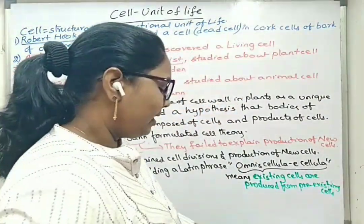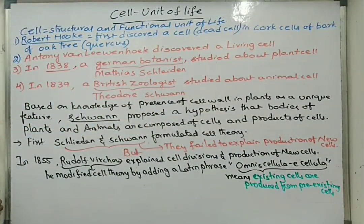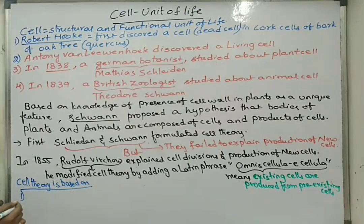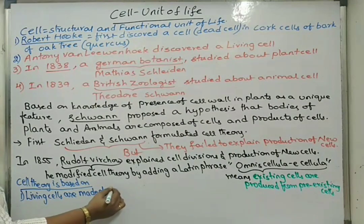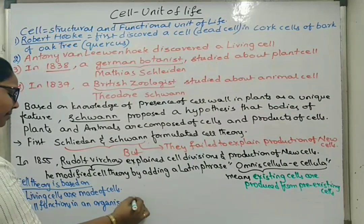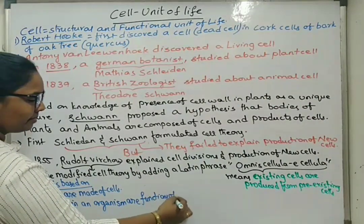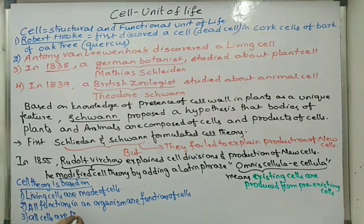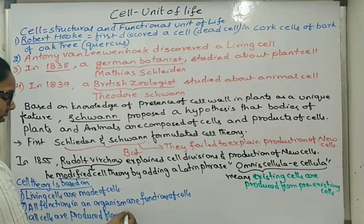This is one important phrase given in cell theory. The cell theory is based on three points: first, all living cells are made of cells; second, all functions in an organism are functions of cells; and third, according to the modification added by Rudolf Virchow, all cells are produced from pre-existing cells.